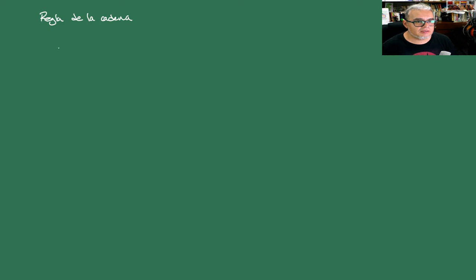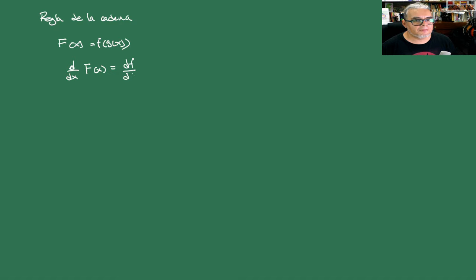La otra propiedad importante es la regla de la cadena. La regla de la cadena nos dice cómo derivar una función F mayúscula, que al aplicar a x es aplicar una función f a una función g de x. Entonces la derivada respecto de x de F mayúscula es la derivada de f respecto de su parámetro (digamos xi), evaluada en g(x), multiplicada por la derivada de g en x.